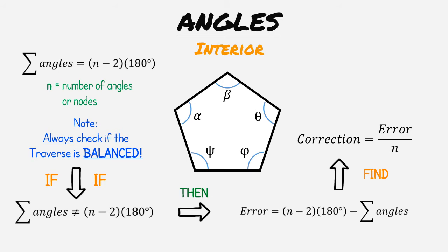Finally that correction would be used to adjust each interior angle. For example, take angle alpha and add or subtract the correction. Repeat for the remaining angles.